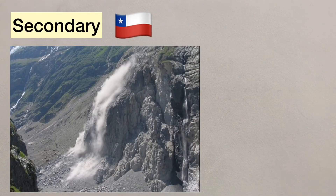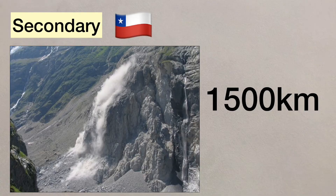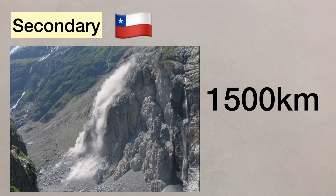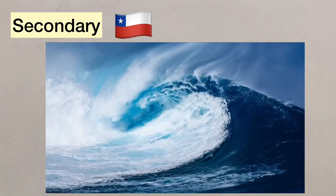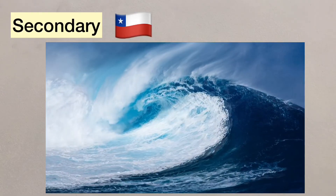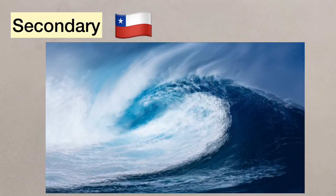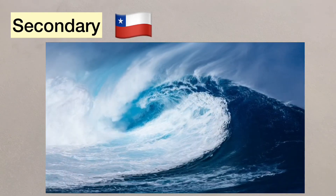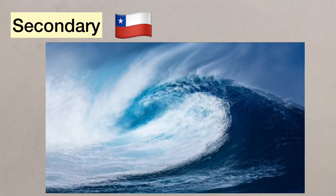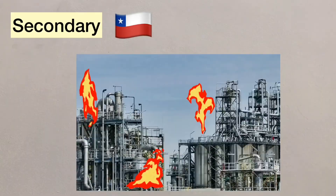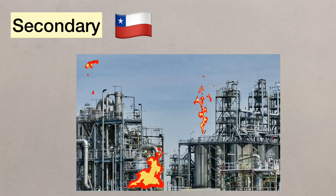In Chile, secondary effects included landslides that damaged around 1,500 kilometres of roads, cutting off many communities for a period of time. Coastal towns were devastated by tsunami waves, with other Pacific countries also being struck by the tsunami. A fire at a chemical plant meant the area had to be evacuated.